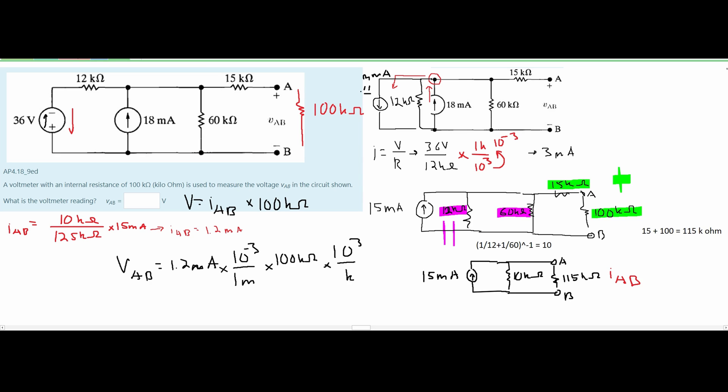We're going to cancel some stuff out. We can cancel out the M's for milli. We can cancel out these 10's because they're opposites and we can cancel out the K. When we do this we're going to get that our V subscript AB is equal to 120 volts.